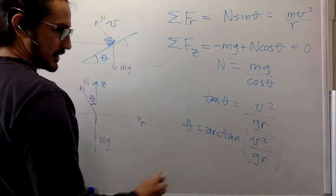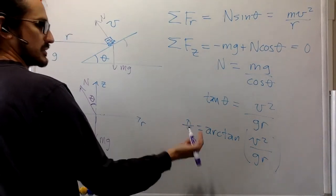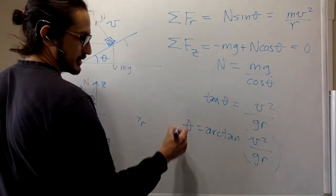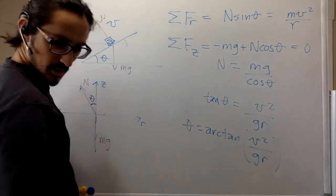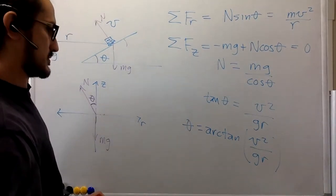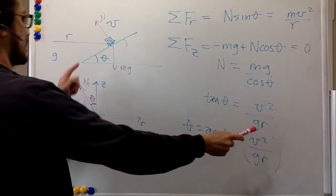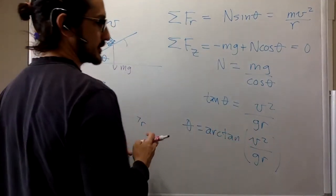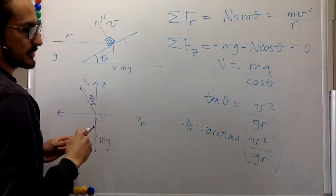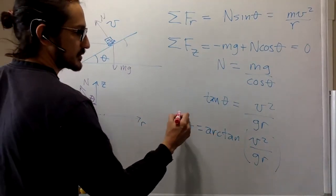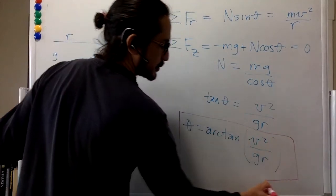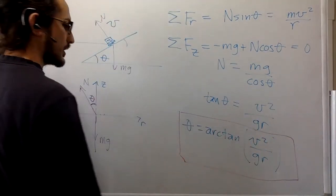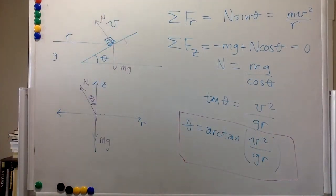And we're asked to get the answer, the angle, as a function of the velocity, g and r. And that proves that it doesn't depend on the mass. Well, there's no mass term over there, so it's independent. It could be a pickup truck or a motorcycle or a regular car. It doesn't matter. It is the same for every vehicle.